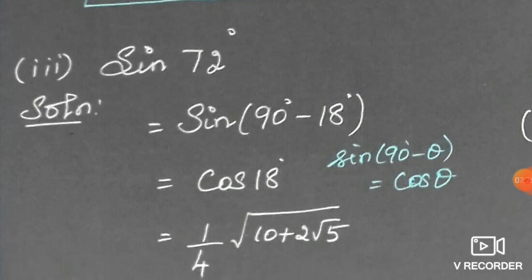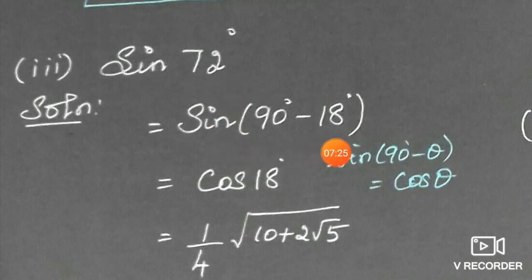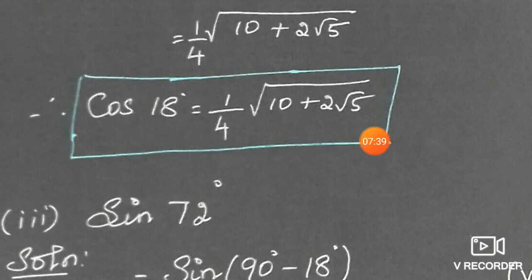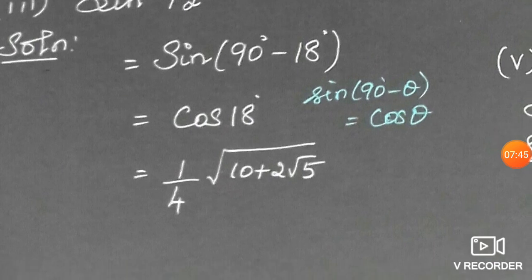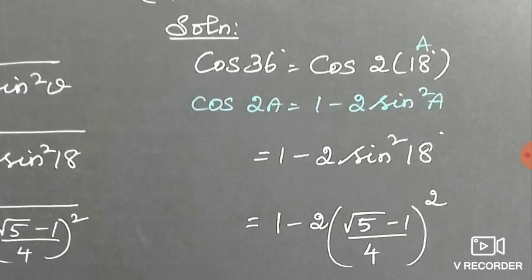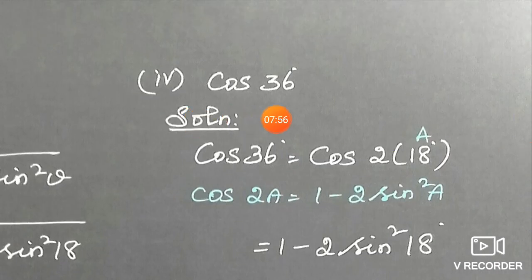Third subdivision: find the value of sin 72°. Since 72° = 90° − 18°, and using sin(90° − θ) = cos θ, we get sin 72° = cos 18° = (1/4)√(10 + 2√5).